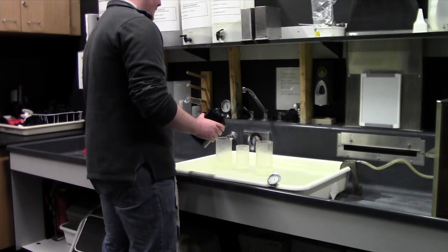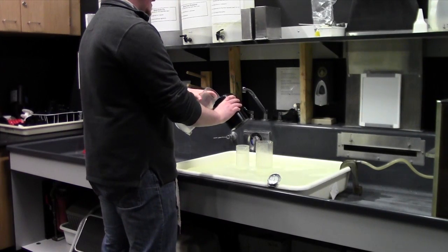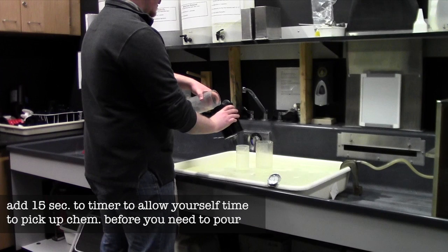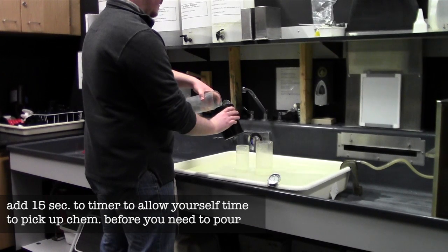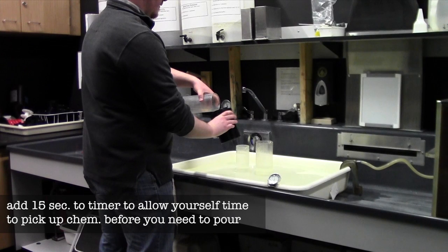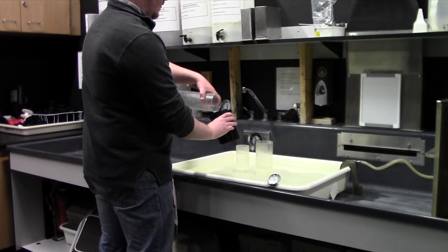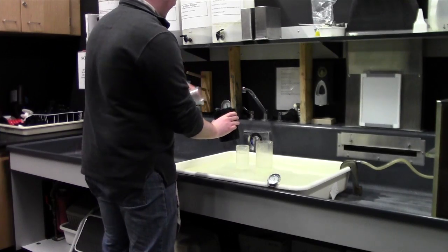Remove the cover from your developer tank. The proper way to pour the developer in is to take 10 seconds pouring it. And remember, once you begin pouring, the timer needs to start.